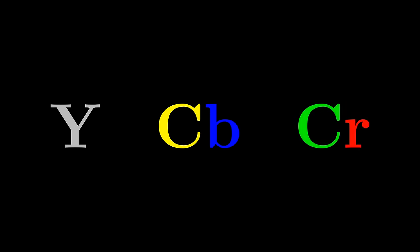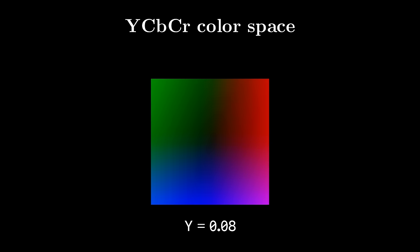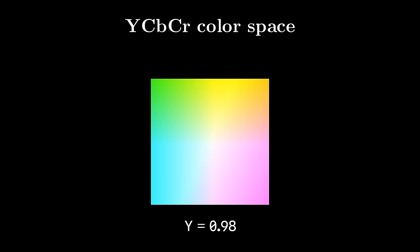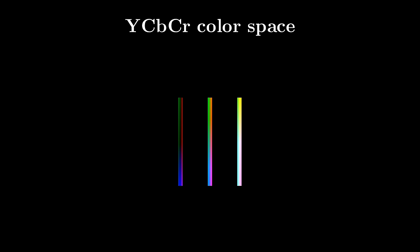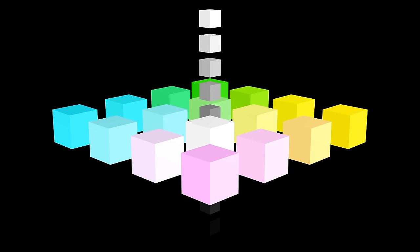This idea of separating brightness is core to another color space called YCbCr, which stands for Y, chroma blue, and chroma red. The Y component measures the luma, or brightness, of an image, and the Cb and Cr components encode the colors. The Y can be thought of as a single vertical axis with larger values encoding more brightness. Every cross-section of the space defines a range of colors at that particular brightness. Using this color space gives us direct access to the part of color that our eyes perceive best.